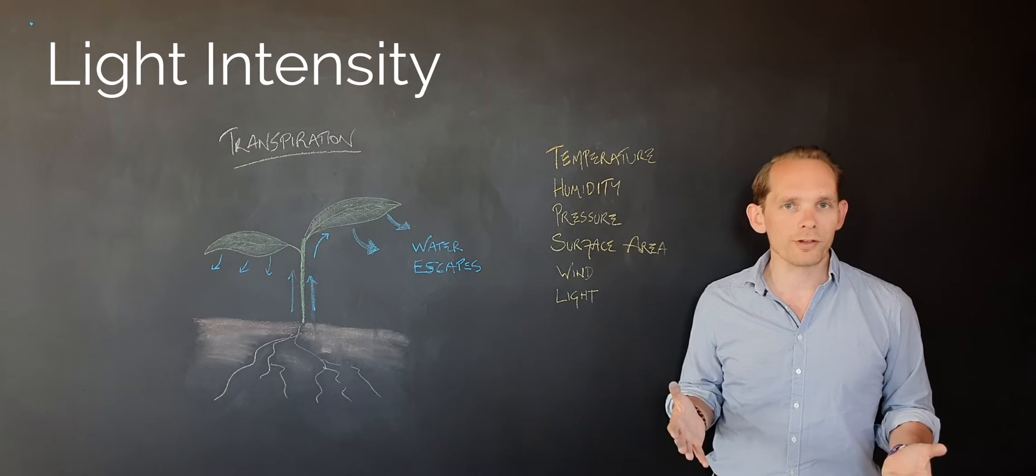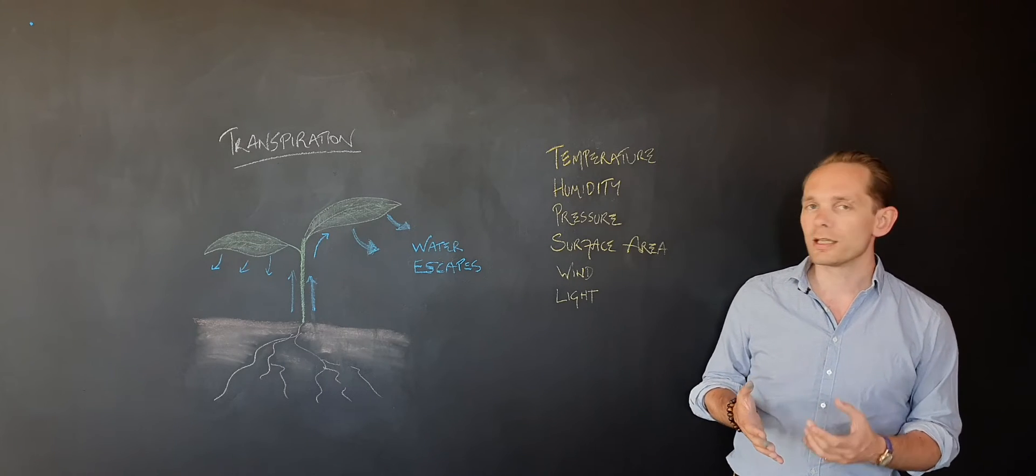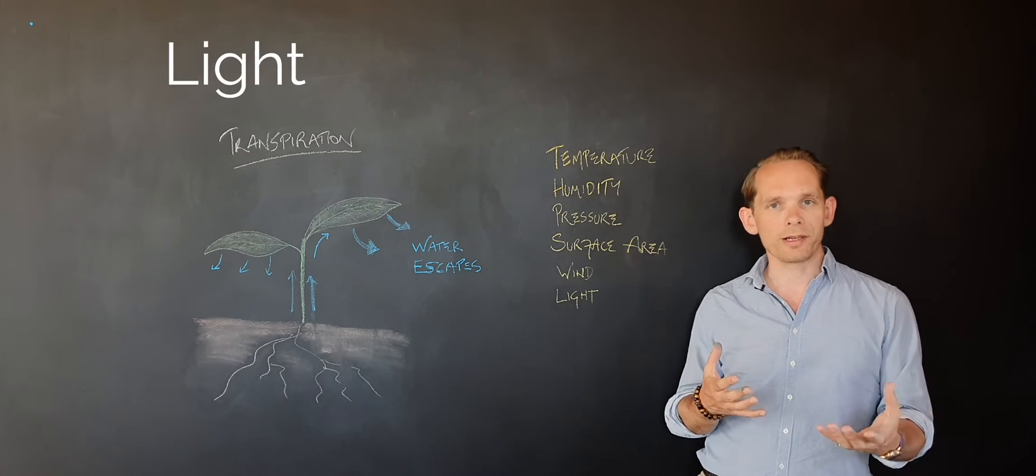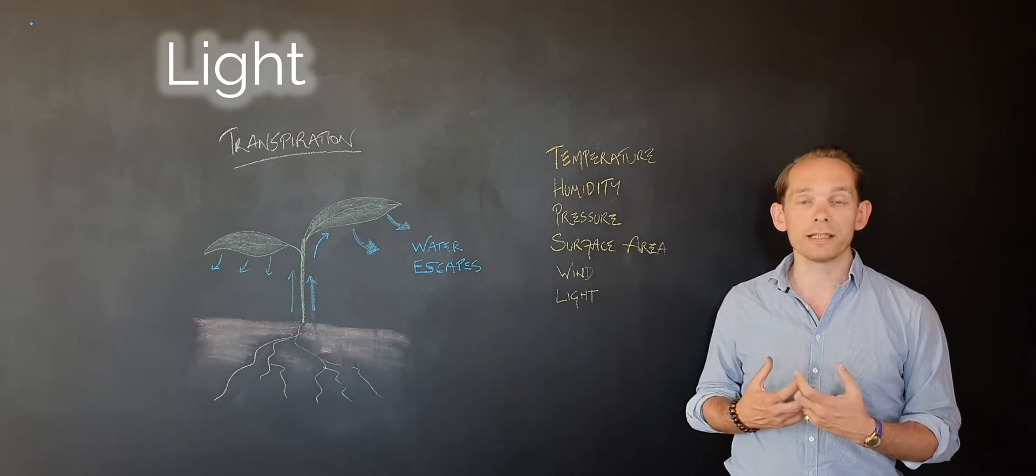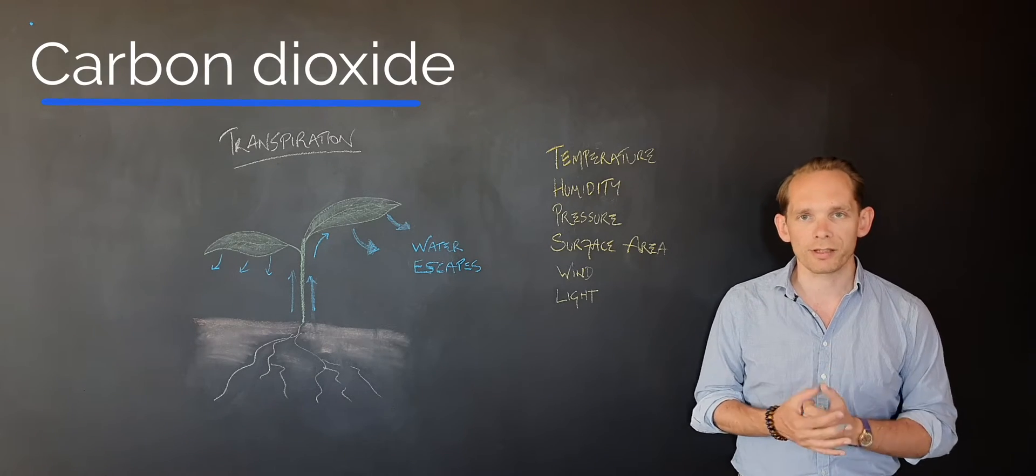At night, plants don't photosynthesize. There's no point, there's no light. But when they do experience light conditions, they open their stomata to allow gases to diffuse in and out of the leaves, particularly carbon dioxide, which is what they need.